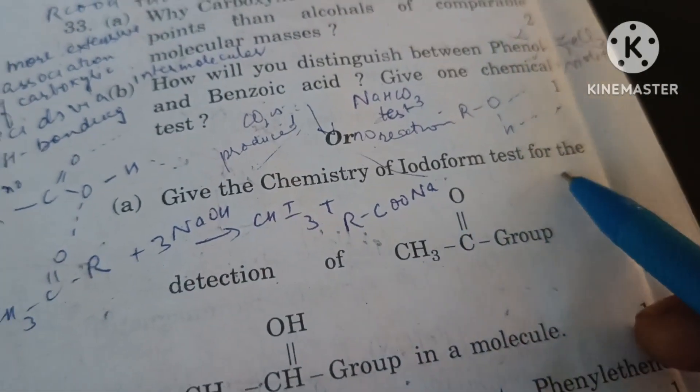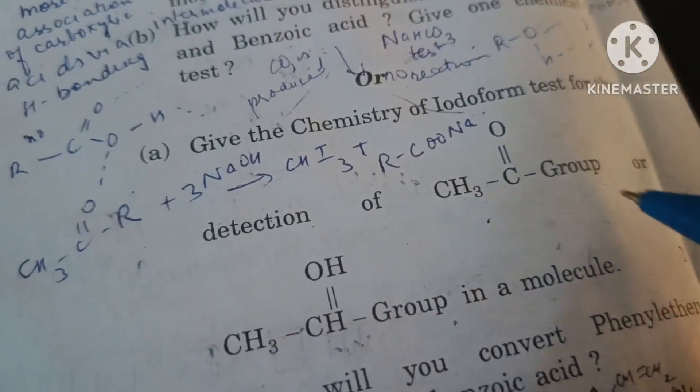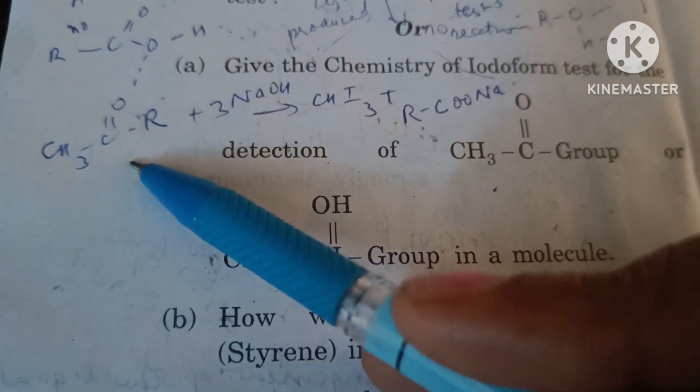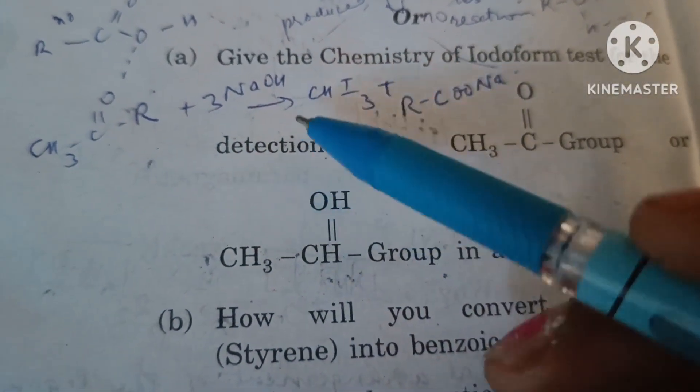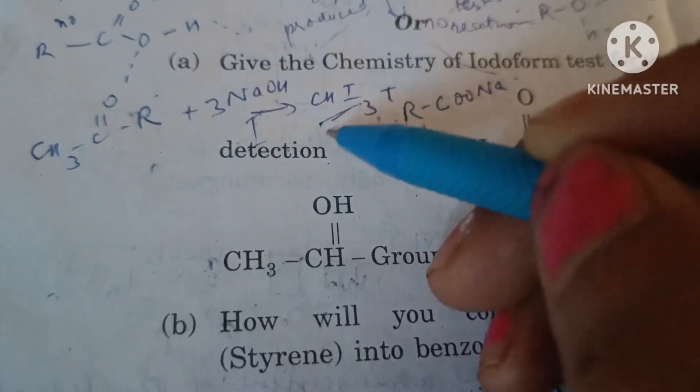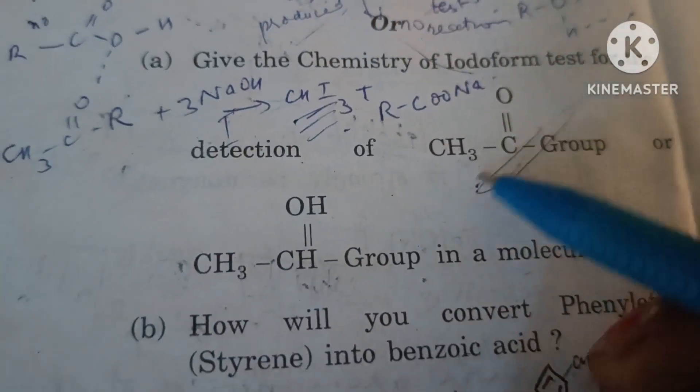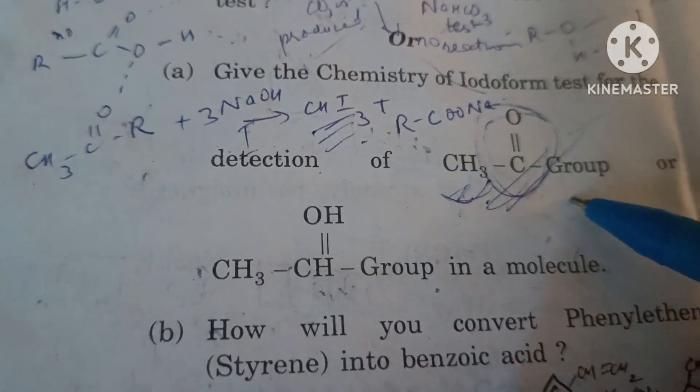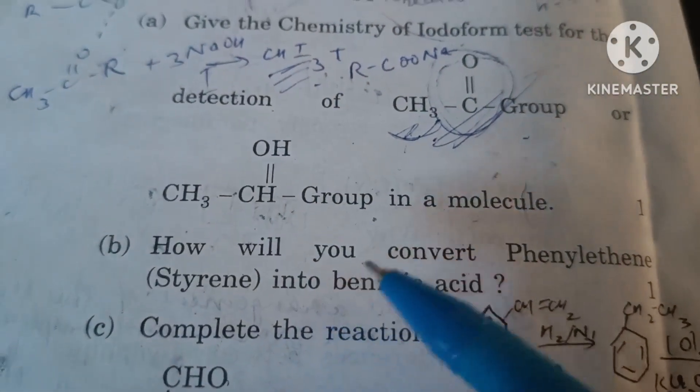Give the chemistry of iodoform test for detection of carbonyl group, methyl carbonyl group. When a methyl ketone is made to react with sodium hydroxide and iodine, it forms yellow colored precipitates of iodoform. This test is given by groups containing methyl group adjacent to carbonyl group, whereas other compounds do not give this test.